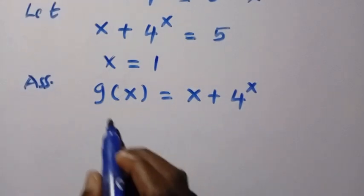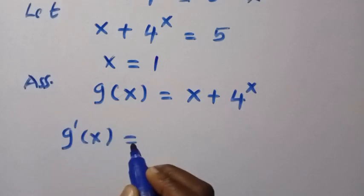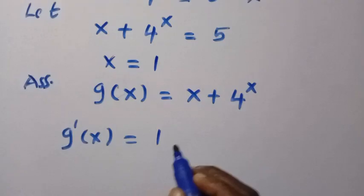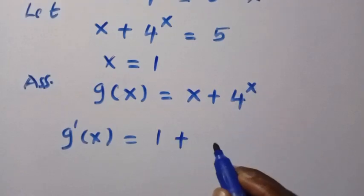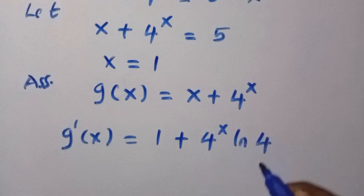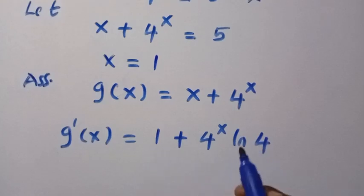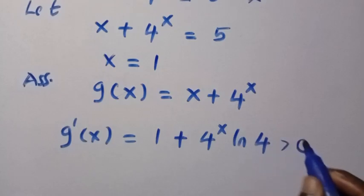By differentiating this, we have g'(x) equals the differential of this one. This is x, we have it as 1, plus when we differentiate 4^x, that is 4^x ln(4). And for this function, if we start plugging the values, no matter what values we plug in here, it is always greater than 0.